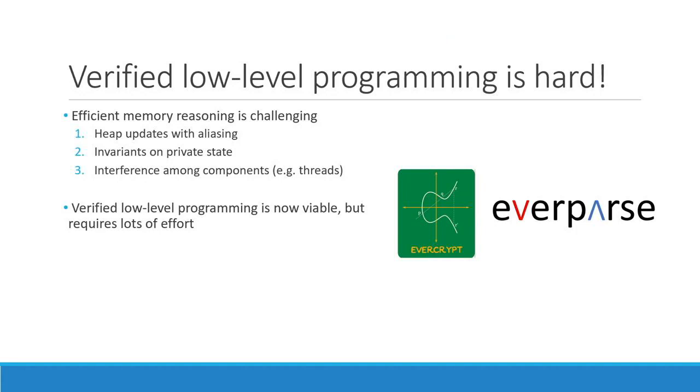Over the past few years, several projects have been successful in verifying low-level programs, and I want to mention a few developed as part of Project Everest. The first is EverCrypt, a verified industrial-grade cryptographic provider implemented in F-Star, extracting to a mix of C and assembly code for maximum performance — its performance beats state-of-the-art unverified implementations in many cases. The other project is EverParse, which provides verified parsers and serializers, with ongoing work to integrate it into Microsoft's Hyper-V. Such projects showed that verified low-level programming was viable, totaling about 100,000 lines of code.